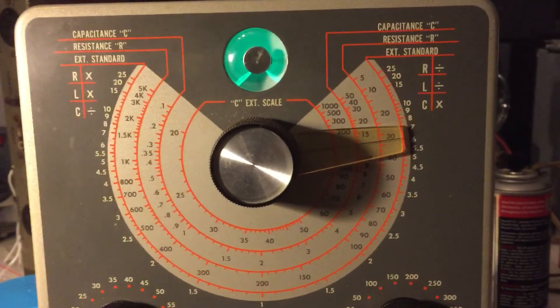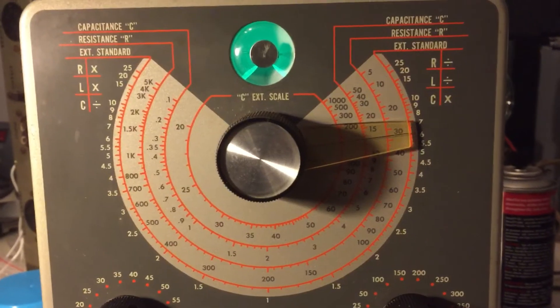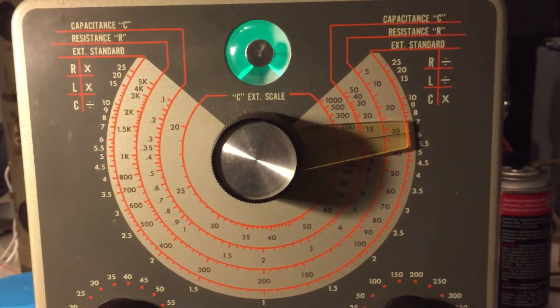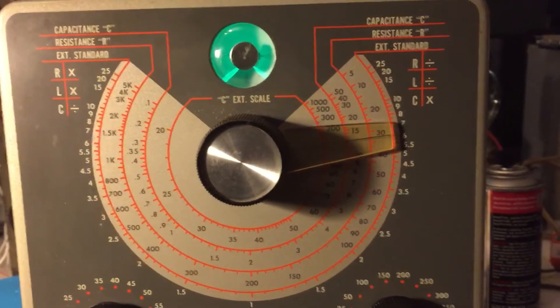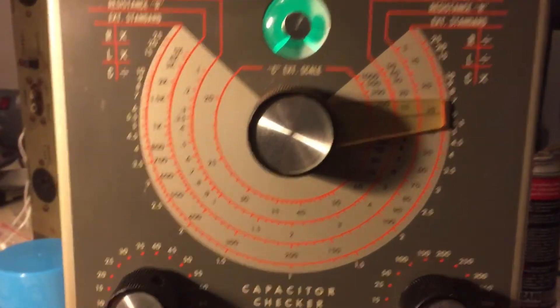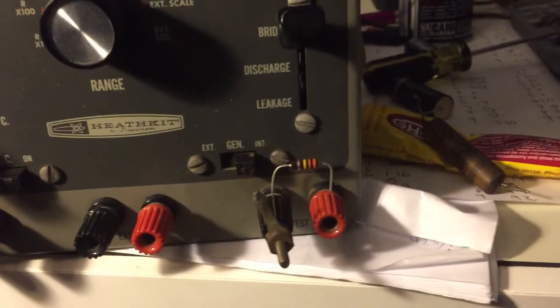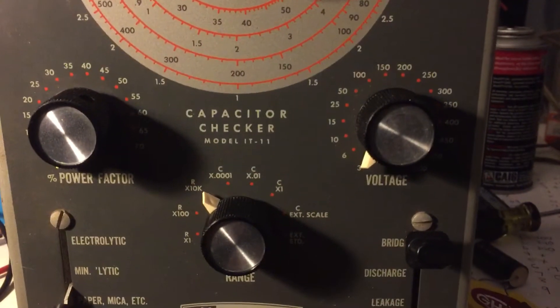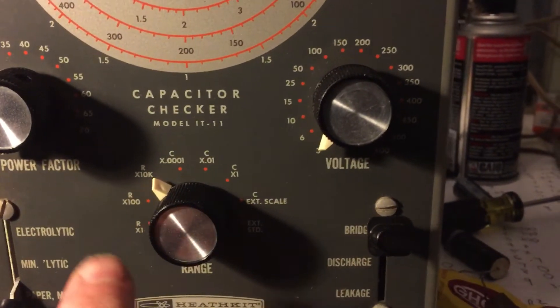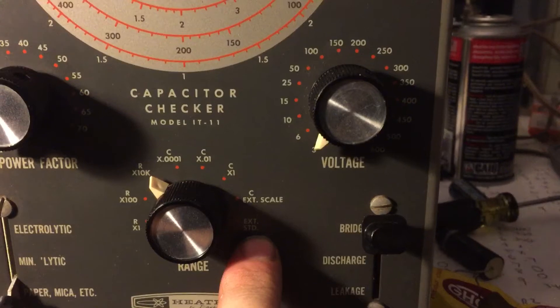So the resistor function works very well with regard to reading resistance on this unit. I could also put another resistor of known value on these terminals and turn this to external standard, so we're using an external standard reference as opposed to an internal standard reference.